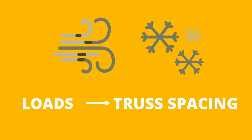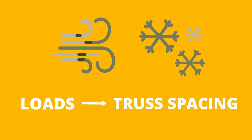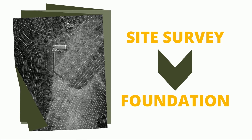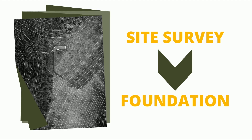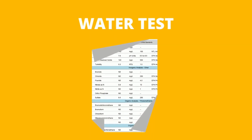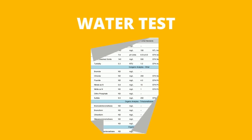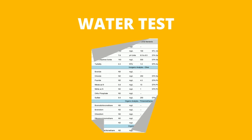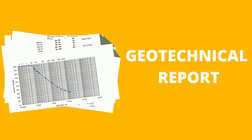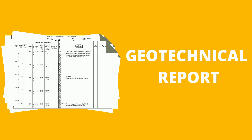The wind and snow loads will inform the truss spacing for your greenhouse and the head house. Then we'll need a site survey, which you can coordinate with a local survey firm — that will help inform the foundation work. A water test, whether you have public water or a well. We have a water specialist on our team that can help analyze those results, and depending on what kind of growth system you want to go with, we can make recommendations for water treatment. And lastly, a geotechnical report — a special soil analysis for building structures, which also helps inform the foundation design.